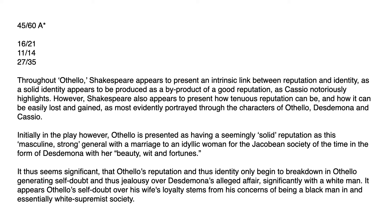Initially in the play, Othello is presented as having a seemingly solid reputation as this masculine, strong general — with a marriage to an idyllic woman for the Jacobean society of the time, in the form of Desdemona, with her beauty, wit and fortune. It thus seems significant that Othello's reputation, and thus identity, only begin to break down as Othello generates self-doubt and jealousy over Desdemona's alleged affair — significantly with a white man — stemming from his concerns of being a black man in an essentially white-dominated society.